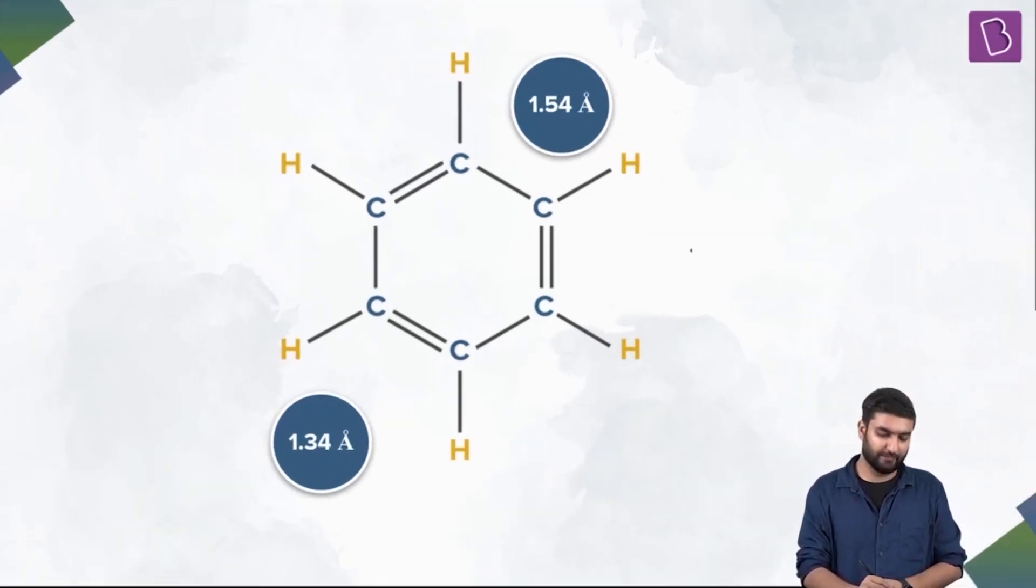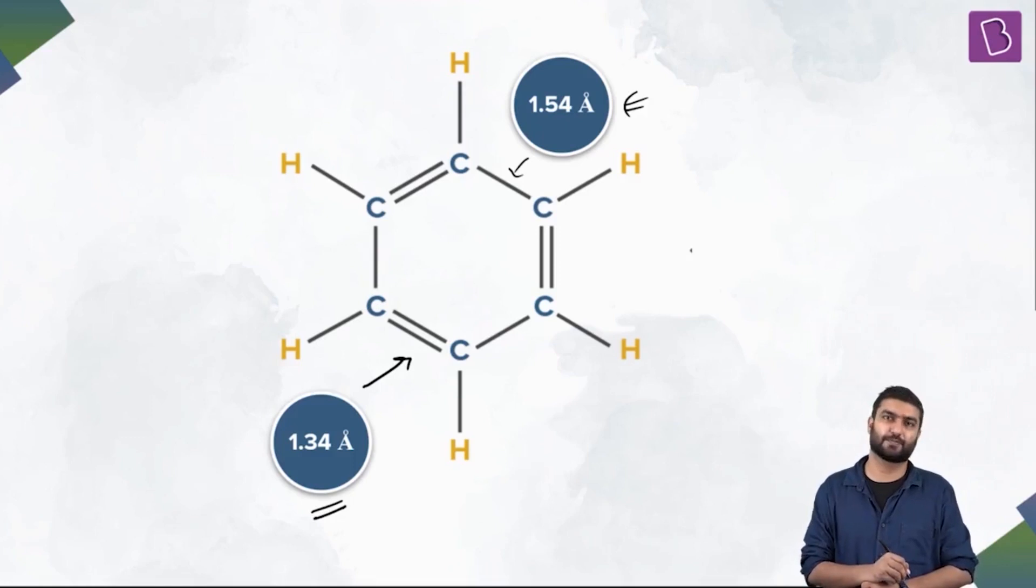So this bond here, for example, this bond length here should be like a double bond, so it should be 1.34 angstrom. This one over here should be like a carbon-carbon single bond, so this should be like 1.54 angstrom. And why we are introducing this here right now is because we'll come to the conclusion later when the bond lengths didn't come out to be as we expected them to be. The need for a new theory further got strengthened.